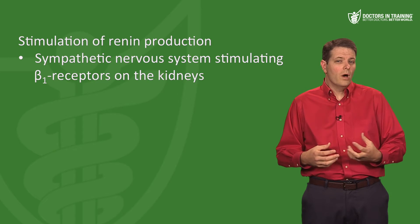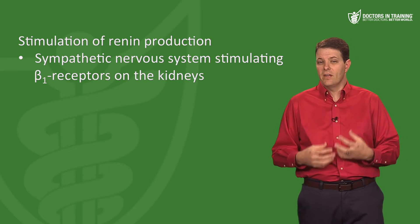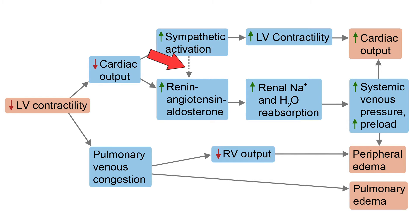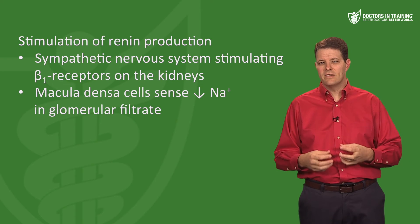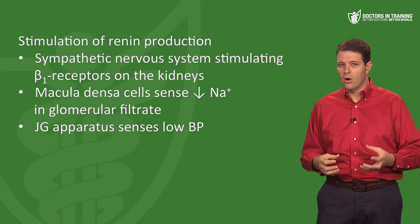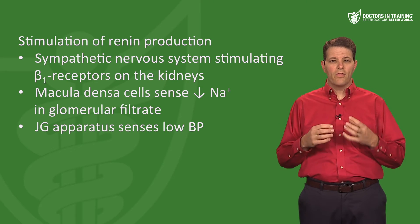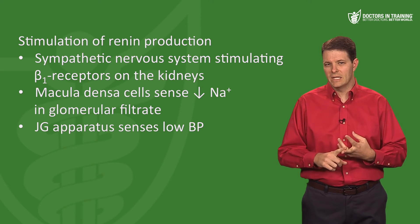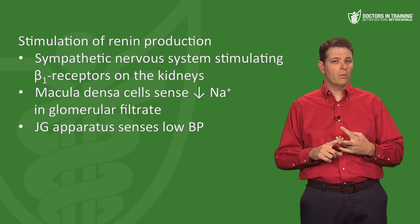A second way to stimulate renin production is that macula densa cells in the kidney sense reduced sodium in the glomerular filtrate. The third — most important for CHF — is that the juxtaglomerular apparatus senses low blood pressure and tells the kidney to secrete more renin. Renin then cleaves angiotensinogen into angiotensin I.